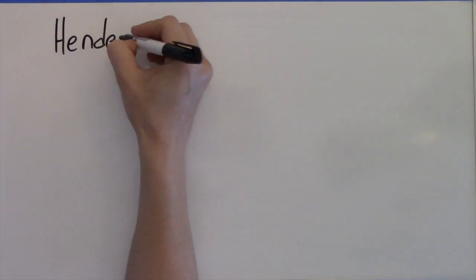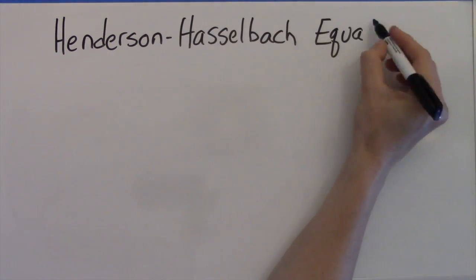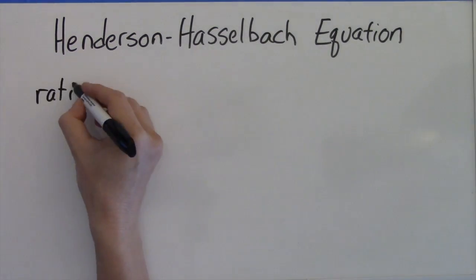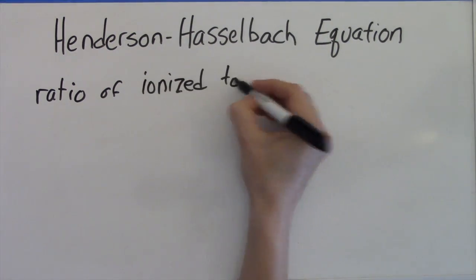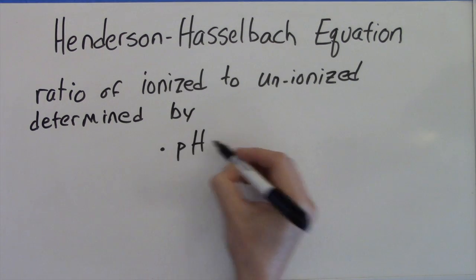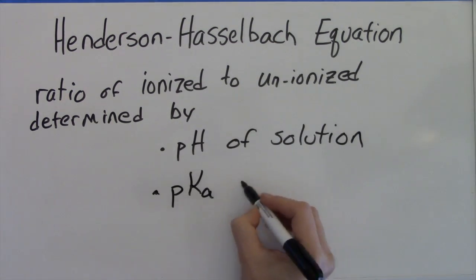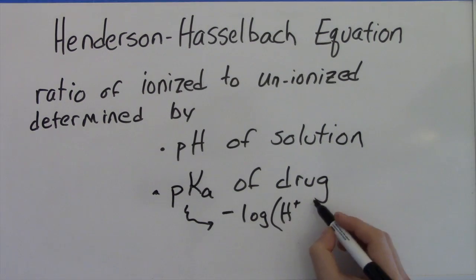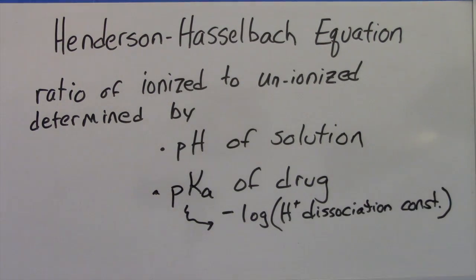The Henderson-Hasselbalch equation describes how the relative proportion of ionized to unionized drug or any substance is determined by the pH of the solution in which it is dissolved and the drug's pKa, which is the negative log of the hydrogen ion dissociation constant of that drug.